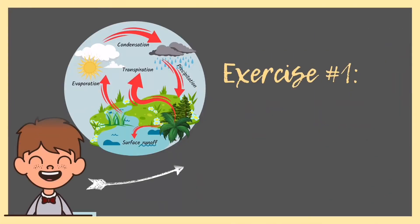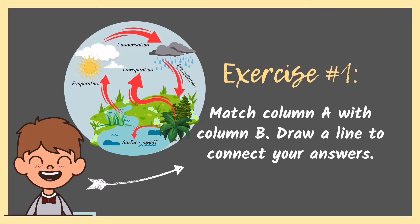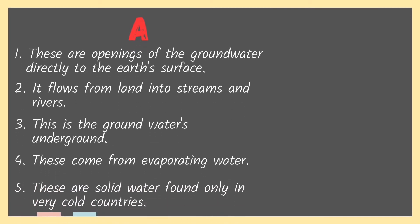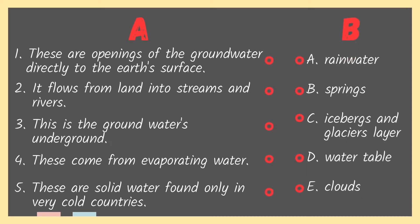I think you are now ready for Exercise 1. What you are going to do is match column A with column B — just draw a line to connect your answers. We have 5 descriptions from column A; choose your answer in column B. Number 1: These are openings of the groundwater directly to the Earth's surface. Number 2: It flows from land into streams and rivers. Number 3: This is the groundwater underground. Number 4: These come from evaporating water. Number 5: These are solid water found only in very cold countries. You have 5 minutes to finish this activity. Good luck!